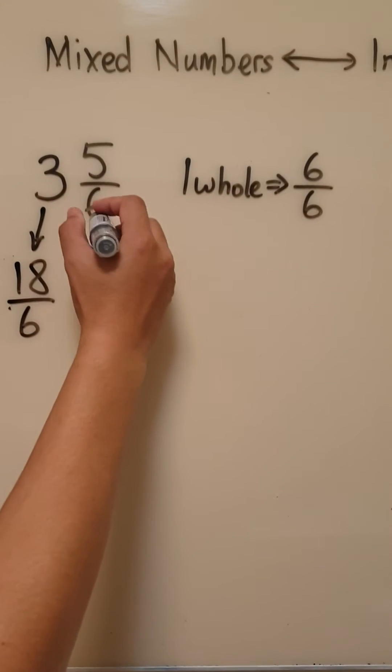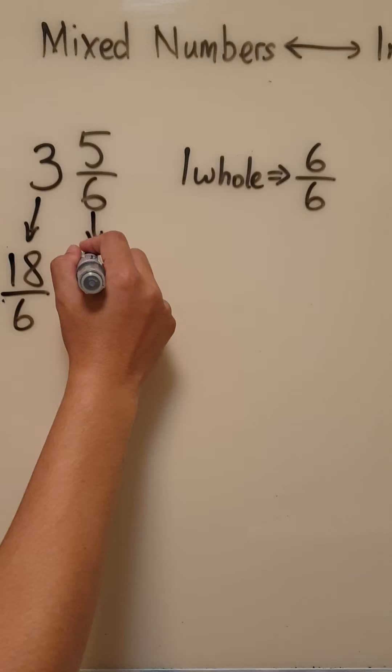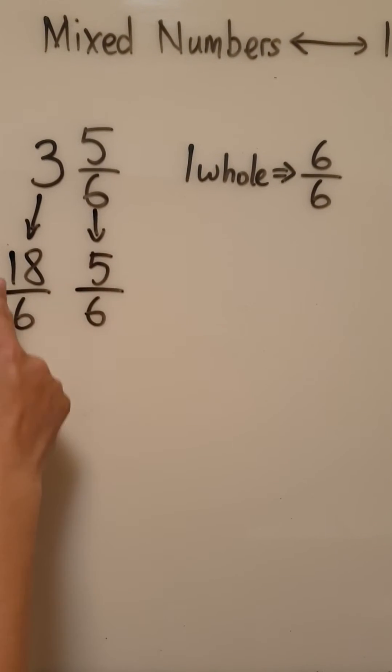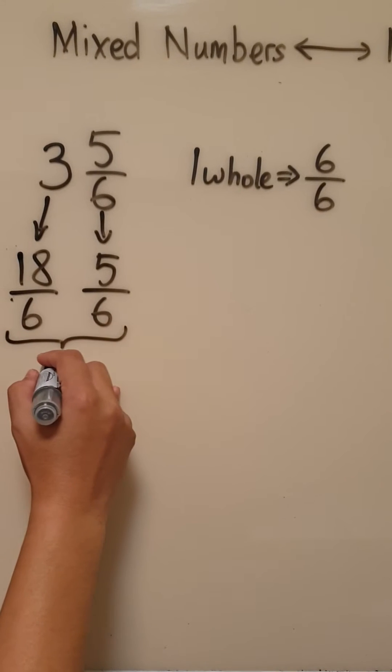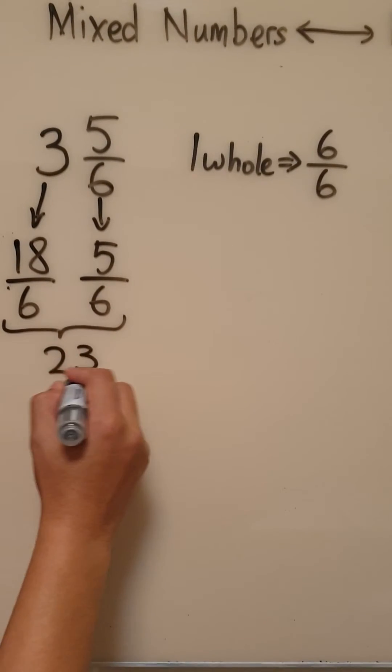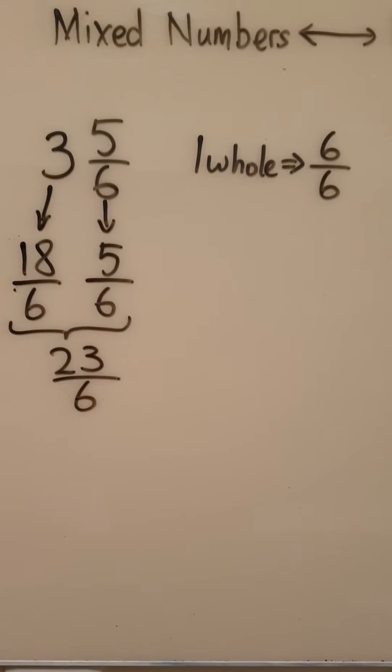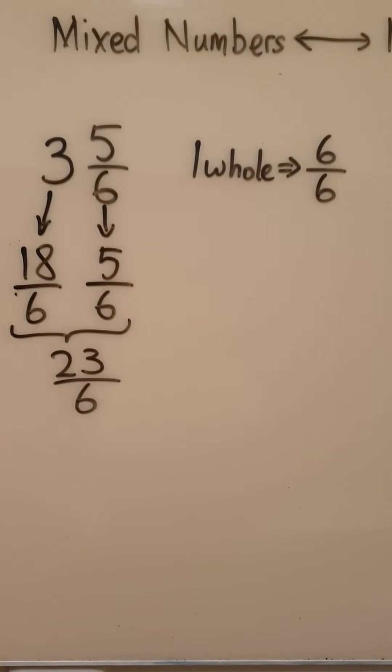And we already have five sixths here. So eighteen sixths and five sixths will give us a total of twenty-three sixths or we can read this as twenty-three out of six.